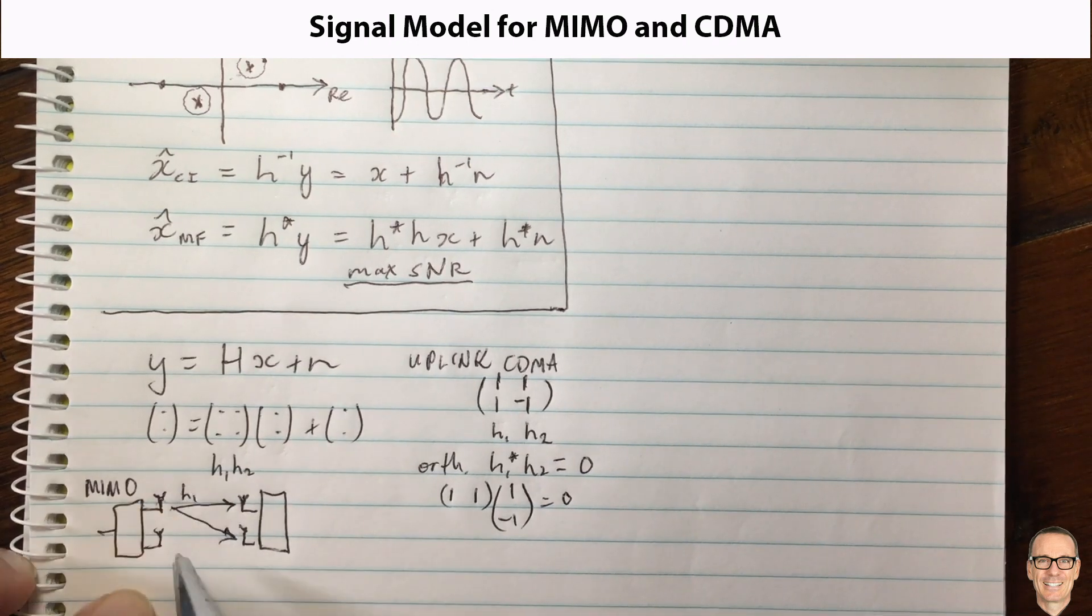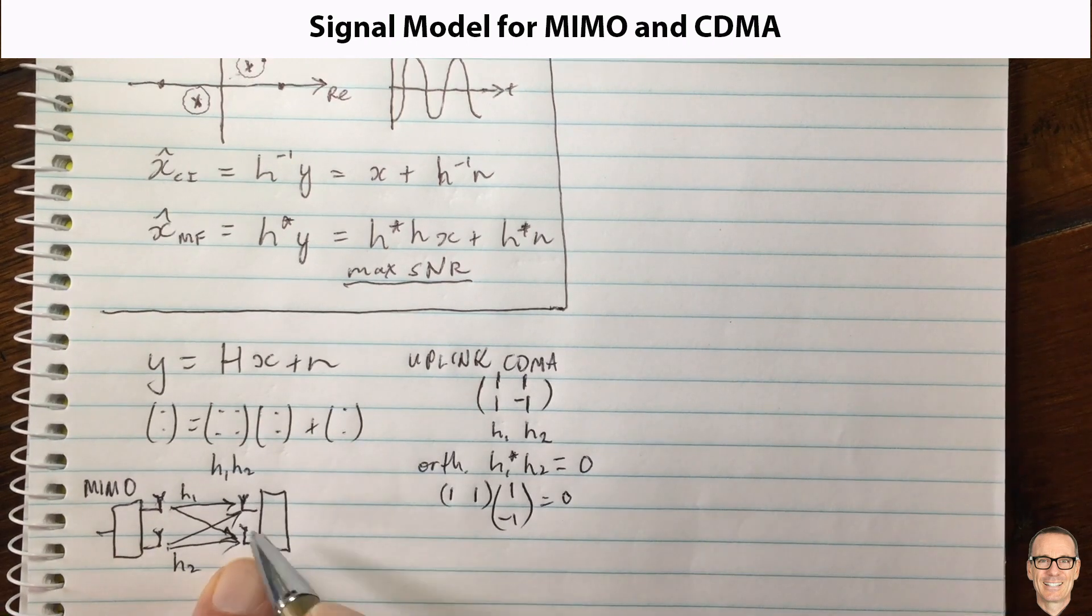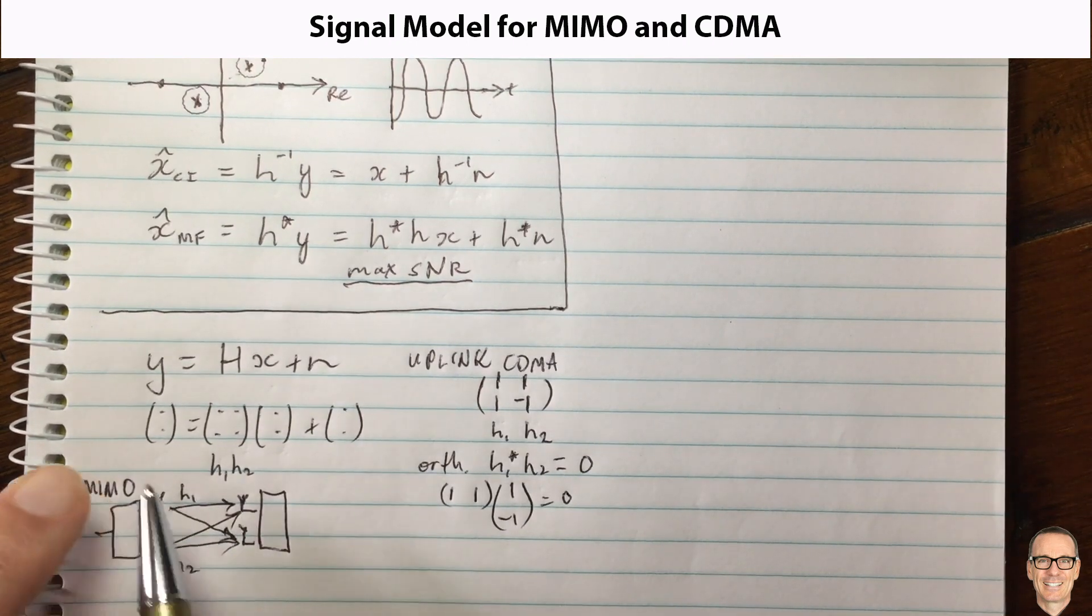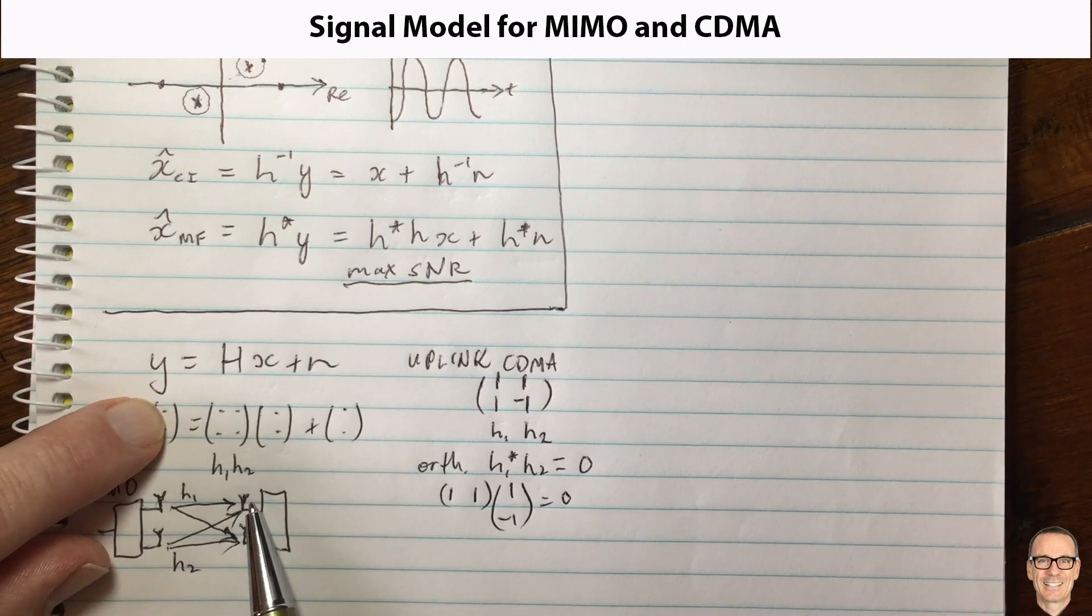Then the signal from this antenna is going to be received by that antenna and that antenna, and this is h1. And then the signal from this antenna is of course also going to be received by those two antennas, and that's h2.